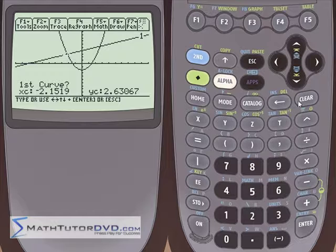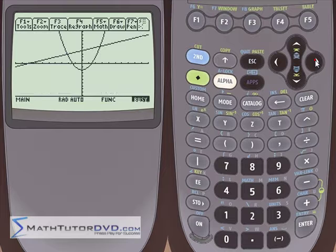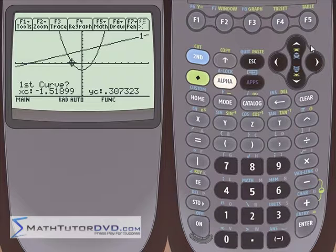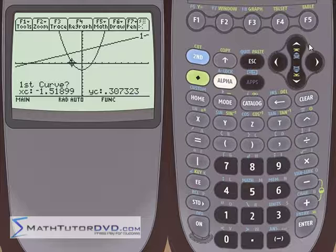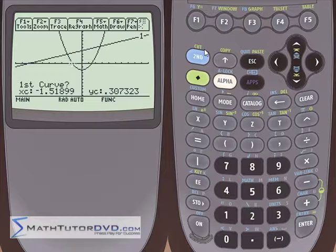First thing it's going to ask is what is the first curve? You have to realize that you might have ten graphs on the screen at any given time. So to find an intersection point, the calculator is going to need to know what two graphs you're interested in looking at. So right now we only have two graphs on the screen, so it's easy.